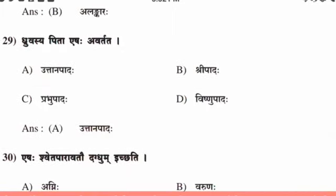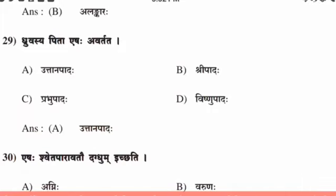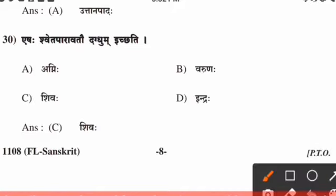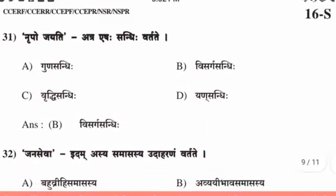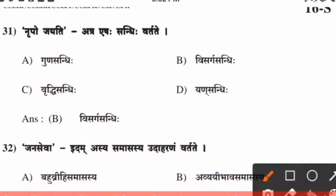Twenty-ninth question, the right answer is option A. Thirtieth question, the right answer is option C. Thirty-first question, the right answer is option B.